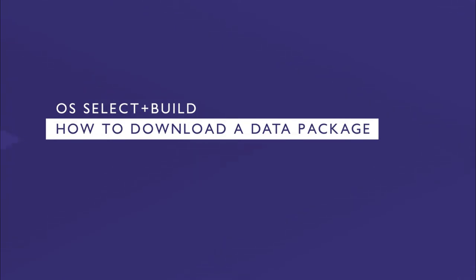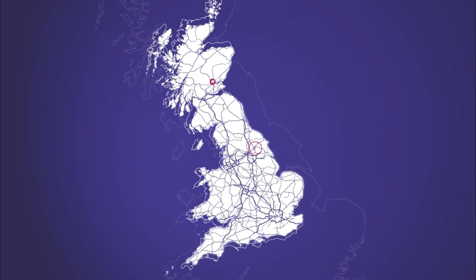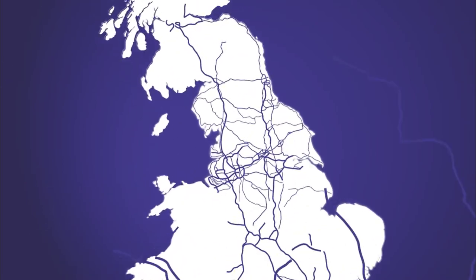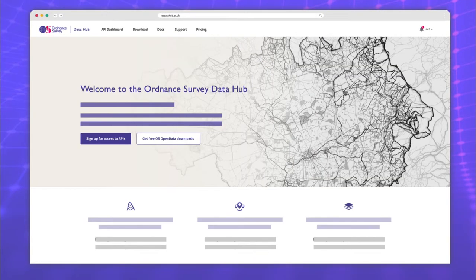OS Select and Build is a new service on the OS Data Hub, which allows you to choose and download exactly the data you need from the OS National Geographic database. This video will show you how to download a data package once you've created a recipe. If you haven't created a recipe yet, see our How to Create a Recipe video.